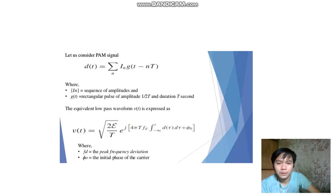Let us consider PAM signal. d(t) is equal to summation of I_n g(t minus nT), where I_n is a sequence of amplitudes and g(t) is a rectangular pulse of amplitude 1/2T and duration T seconds.